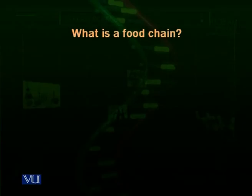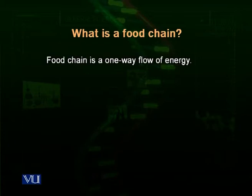Food chains are a one-way flow of energy. A food chain is a flow chart diagram that shows the flow of energy from one biotic component of an ecosystem to another and so on. A food chain is actually a relationship between different trophic levels or different biotic factors within an ecosystem.